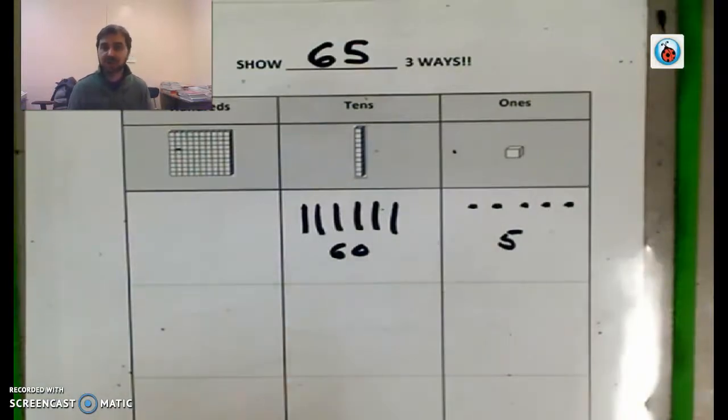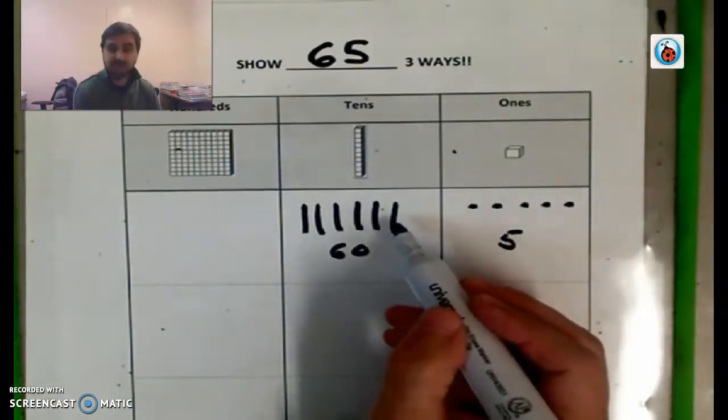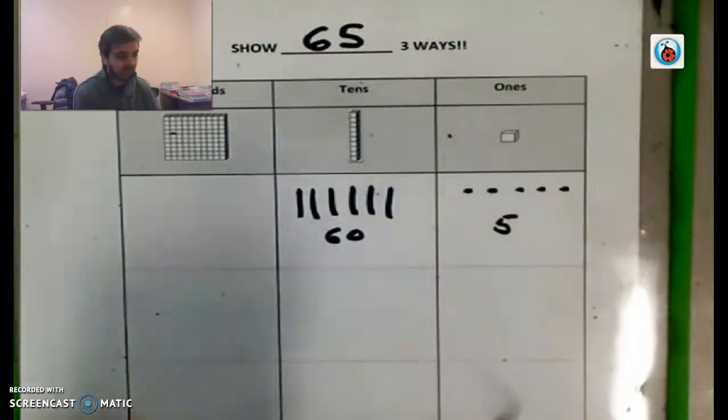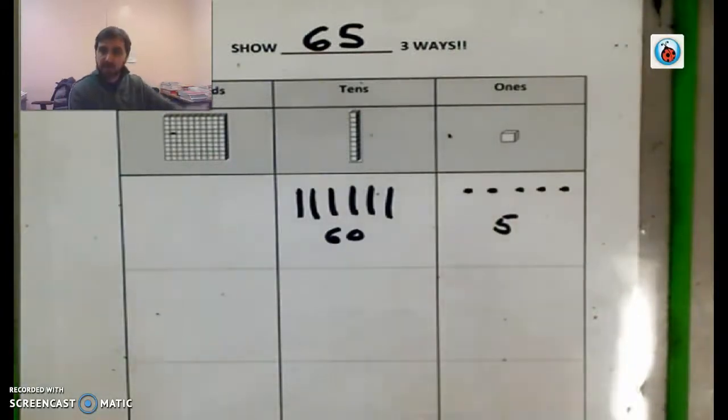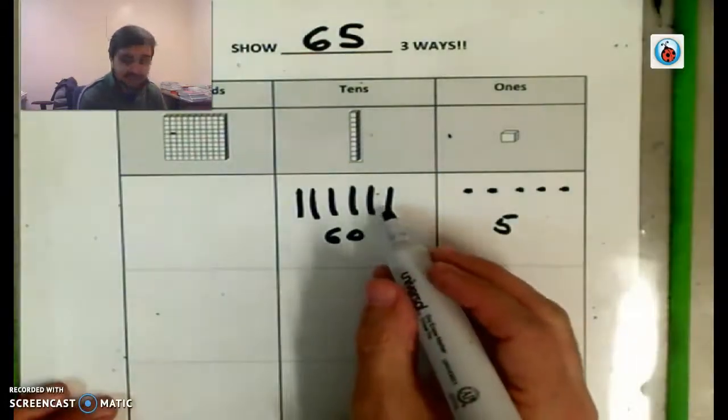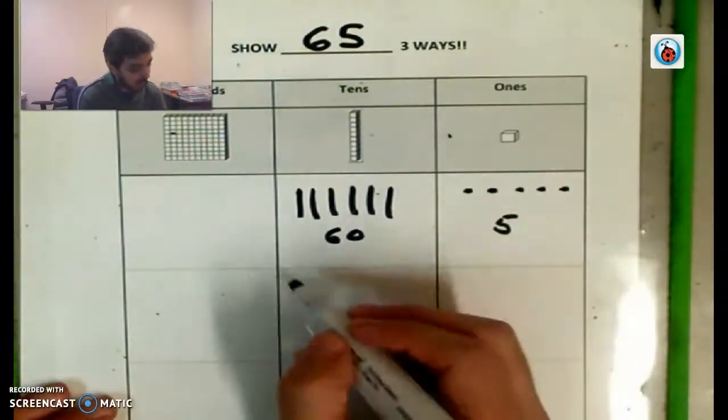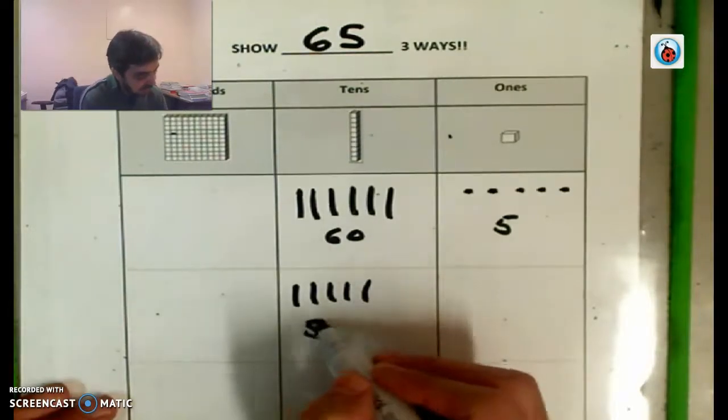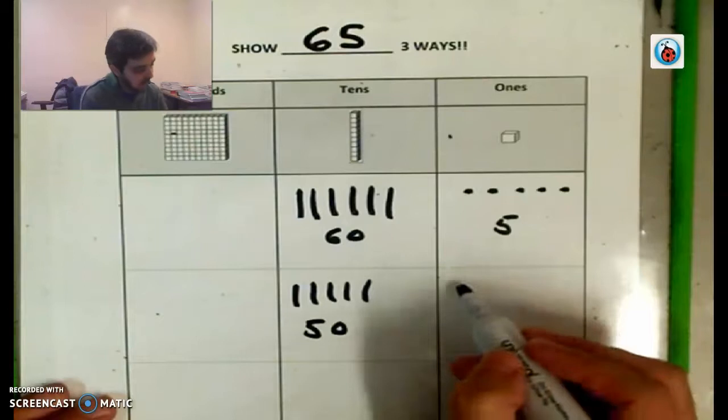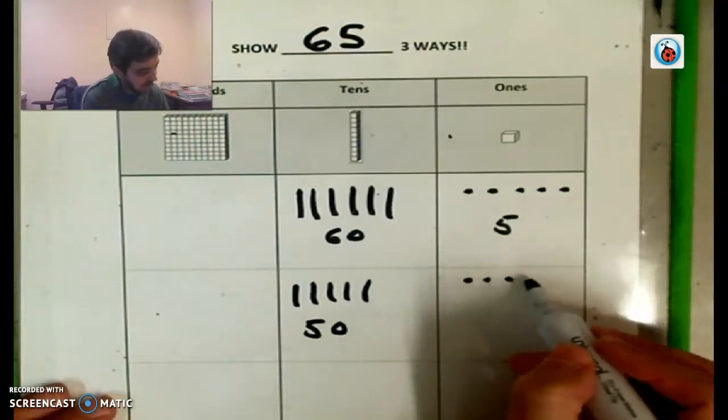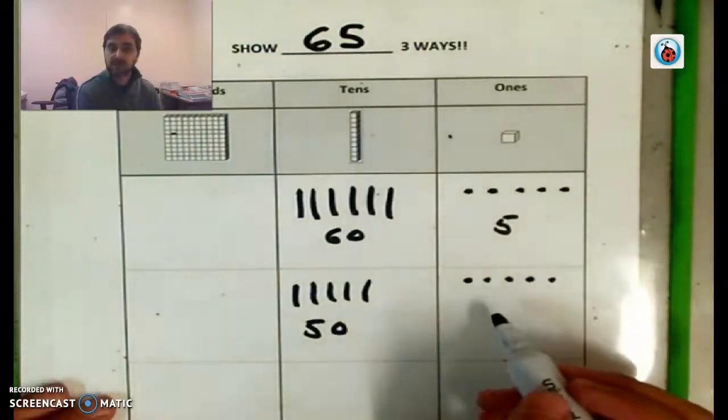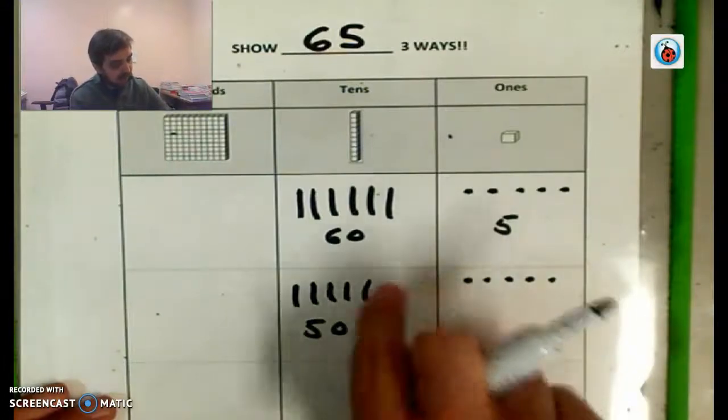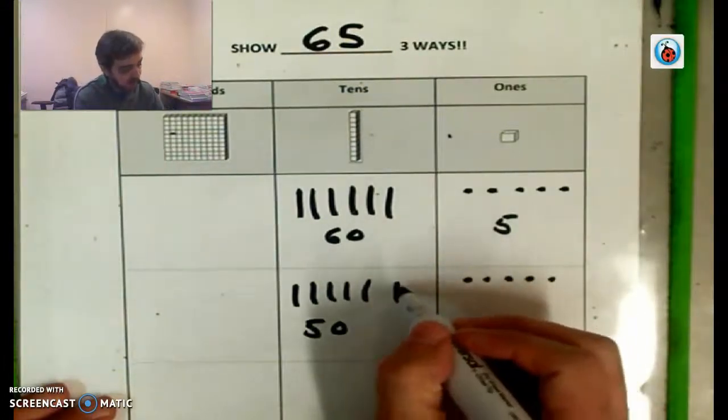Now, another way we could show it is what? What can we do? What did we just learn from the video from me? We could take one of these bags, right? And we could like open it up and pour out the Skittles, right? So if we did that, we would then only have five bags, one, two, three, four, five. So that gives us 50.